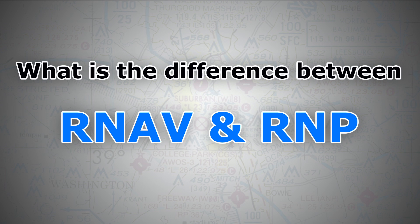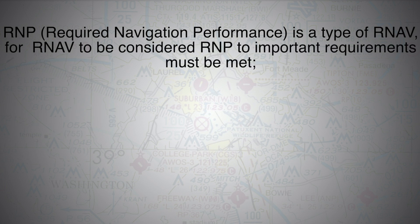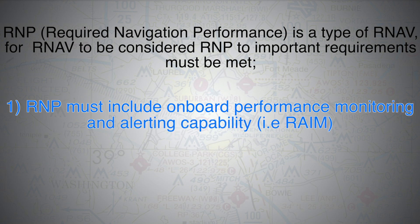Assuming you already know what RNAV or Area Navigation is, I'll go ahead and answer the question. RNP or Required Navigation Performance is a type of RNAV itself; however, for an RNAV system to be considered RNP, two important rules must be met. First, RNP is a PBN system — Performance Based Navigation — that includes onboard monitoring and alerting capability, such as RAIM or Receiver Autonomous Integrity Monitoring. An RNAV standalone system does not incorporate any capability to alert the pilot if the accuracy degrades; RNP does.